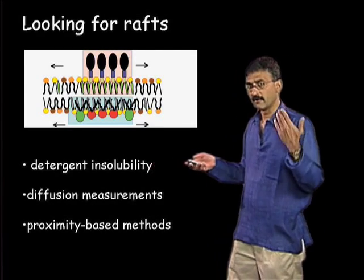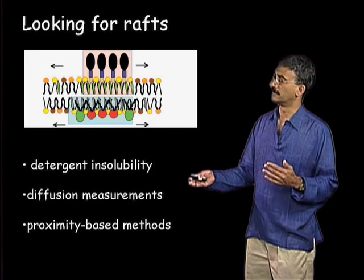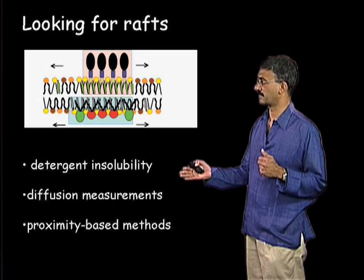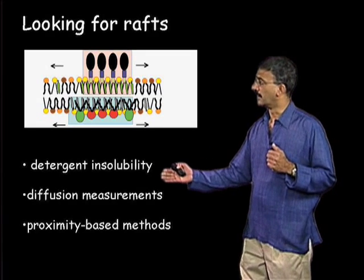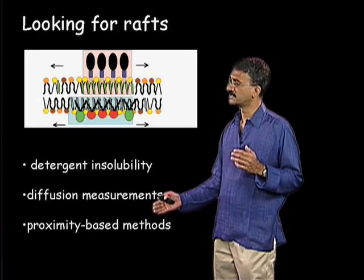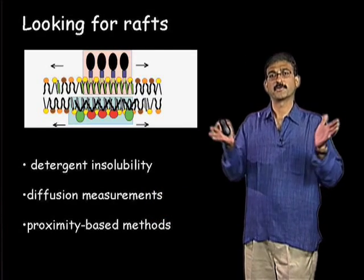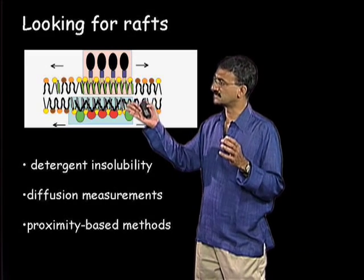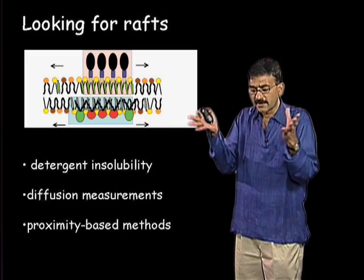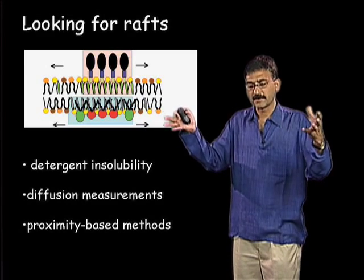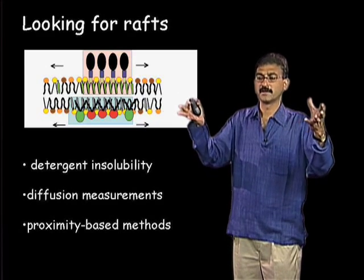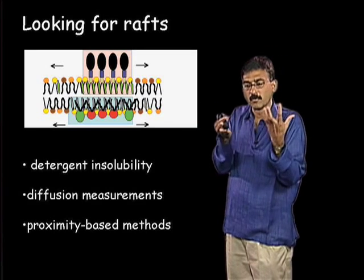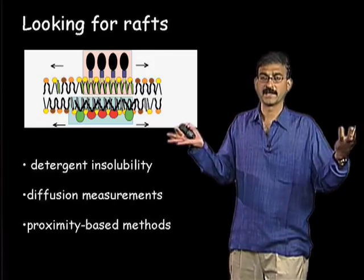In our laboratory we have not looked at diffusion measurements — I will come back to those in part three. The method we have used is based on trying to investigate the proximity between components in the cell membrane and ask whether we can observe a coming together of lipid molecules in membranes of living cells when they are being endocytosed.